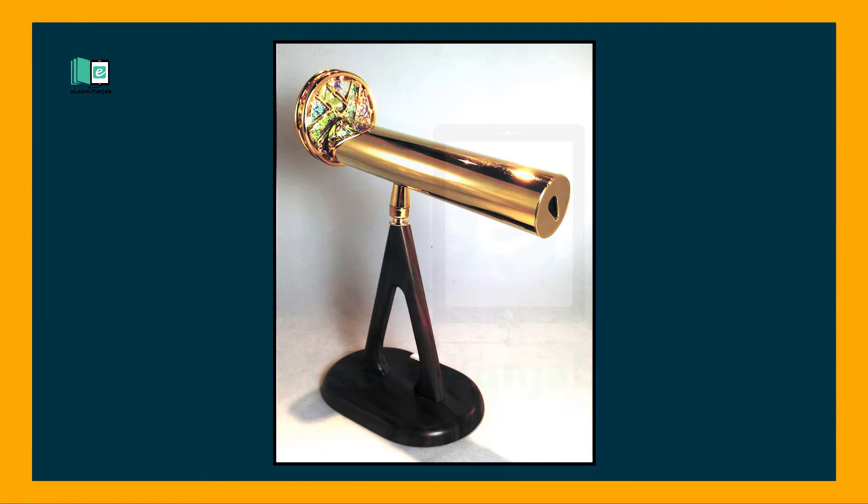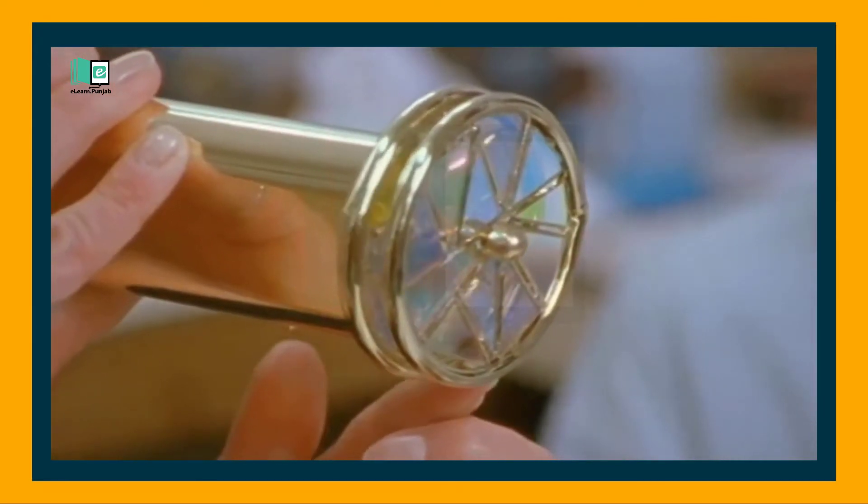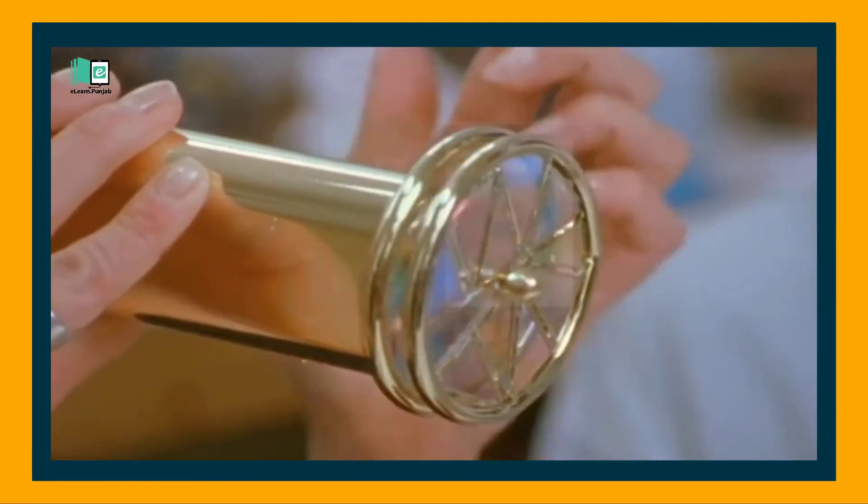He was the first inventor who arranged mirrors and objects in a kaleidoscope. There are many different types of kaleidoscopes, but all work in the same basic way. They use light and mirrors to reflect objects and create patterns.